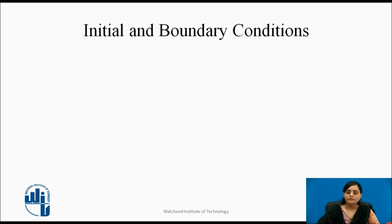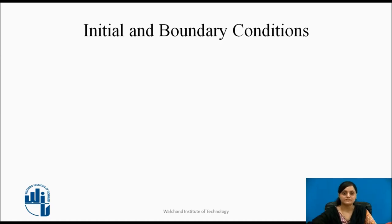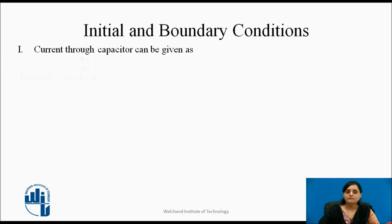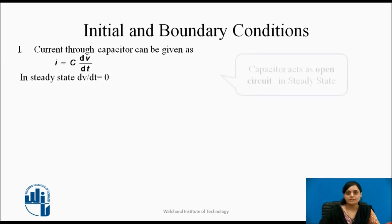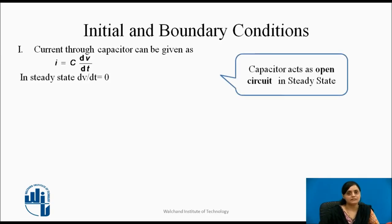When discussing the transient and steady states of circuits, we should also know about the initial and boundary conditions. The capacitor relation is given as I = C dV/dt. In steady state, the rate of change of voltage is zero, therefore the current flowing through the circuit is zero, which indicates that the capacitor acts as an open circuit in steady state.